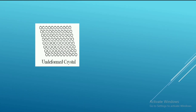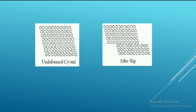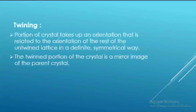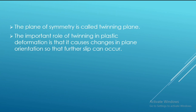In twinning, a portion of the crystal takes up an orientation that is related to the orientation of the rest of the parent lattice in a definite, symmetrical way. The twin portion of the crystal is a mirror image of the parent crystal. The plane of symmetry is called the twinning plane. The important role of twinning in plastic deformation is that it causes changes in plane orientation so that further slip can occur.